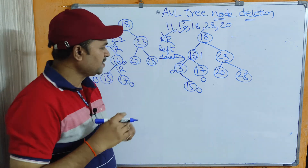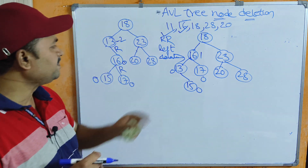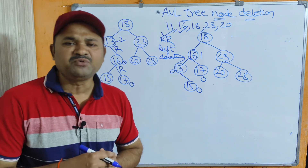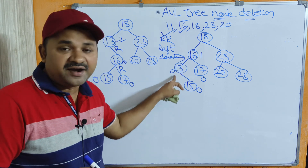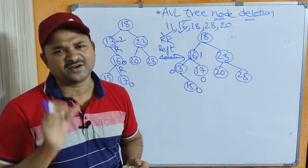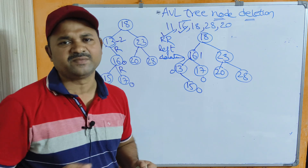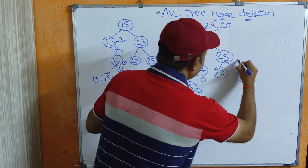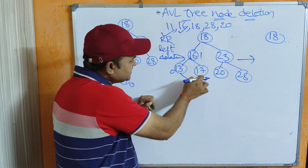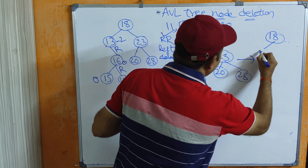Now let us delete node 16. Compare 16 with 18 — 16 is less than 18, so move to the left child. 16 equals 16, found. Node 16 has two children. We can replace it with either the inorder predecessor or inorder successor. Here I am following the second approach — inorder successor — because it will produce an unbalanced node so we can practice rotation. The right subtree contains only one value, 17, so replace 16 with 17.